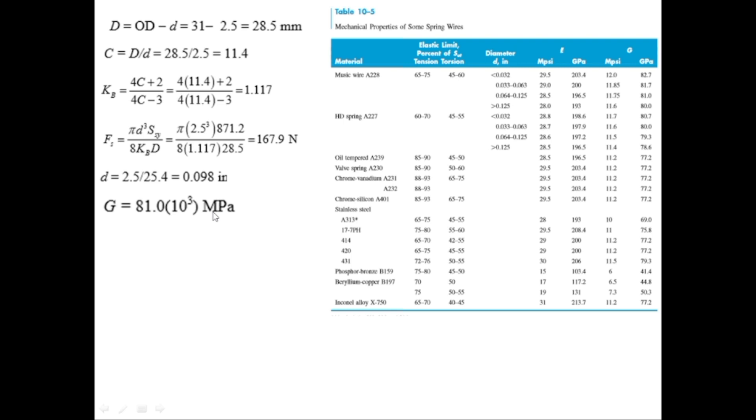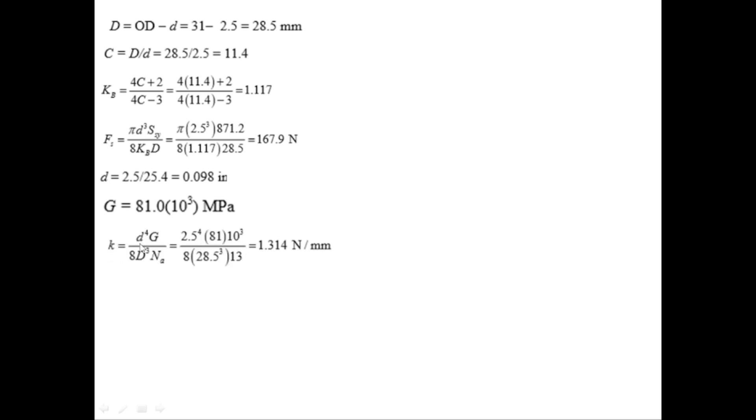This formula has been derived and discussed in previous lectures. Substituting all values into k = d^4 × G / (8 × D^3 × Na) gives k = 1.314 N/mm. To find the free length L0, we use F = kx, where x = L0 − Ls. Rearranging gives L0 = Ls + Fs/k, and substituting the values gives L0 = 162.8 millimeters.